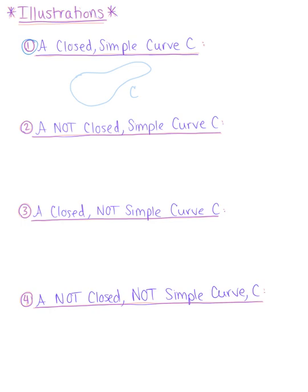What does a curve that is not closed and simple look like? If it's not closed, that means the initial and endpoints are different. Here's your start, here's your finish—these are different. But it's simple, so this curve never intersects itself.